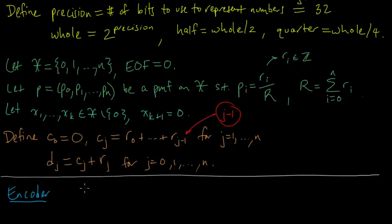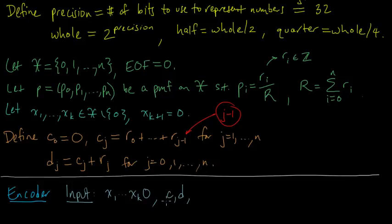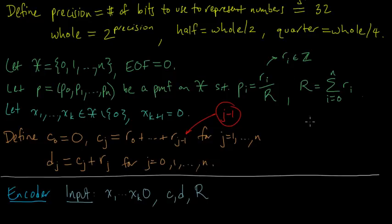So here we go, the finite precision encoder. It takes as input the sequence to be encoded, x1 up to xk, terminated by the end-of-file symbol 0. And we're also going to take in these C and D vectors to determine the probabilities. You could also take in P, but let's take in the Cs and Ds. And let's also take in this capital R. You could determine that from C, but let's go ahead and make that an input argument.